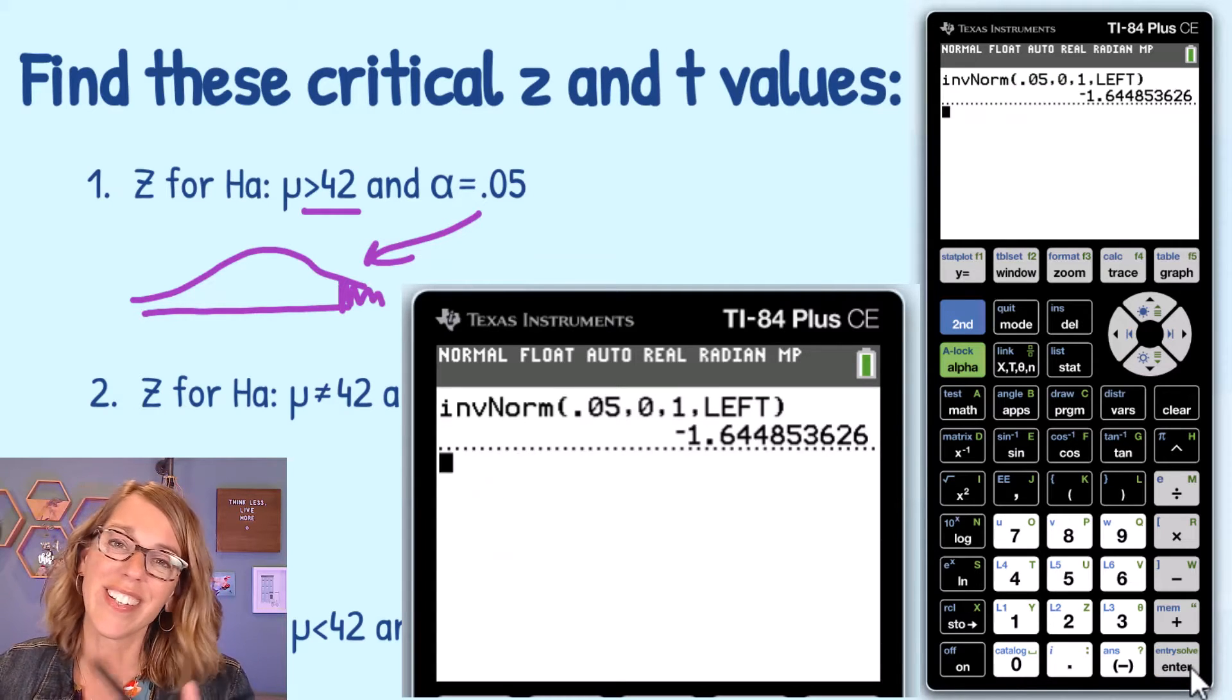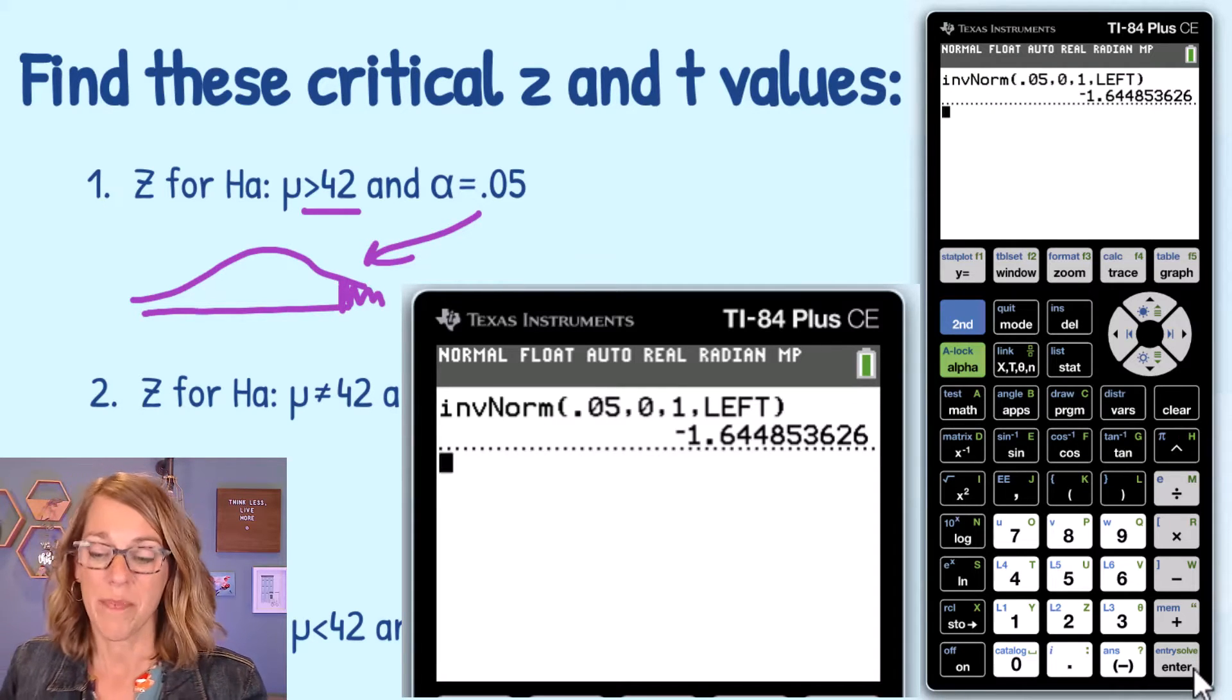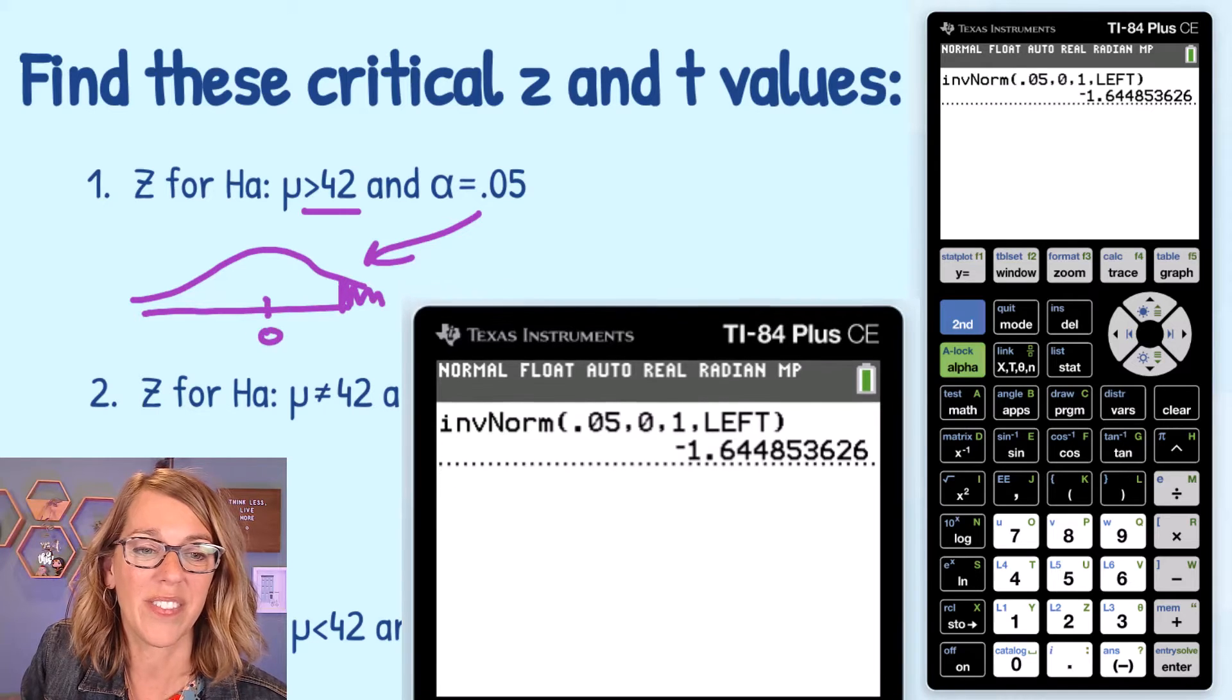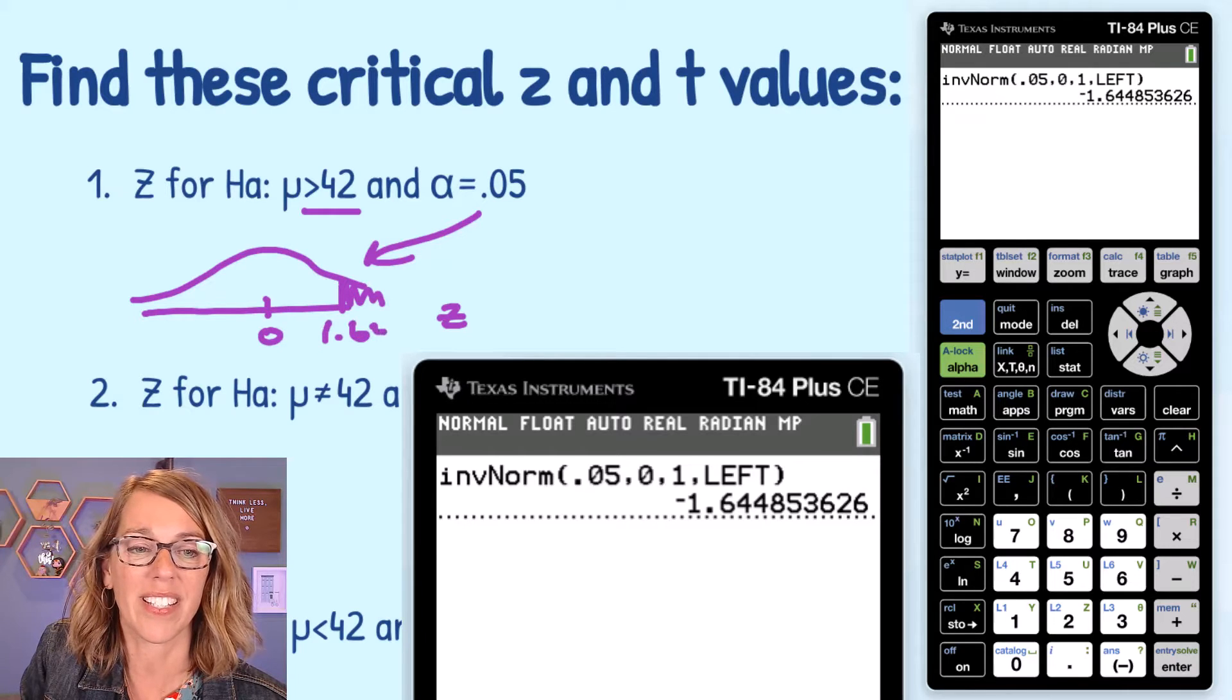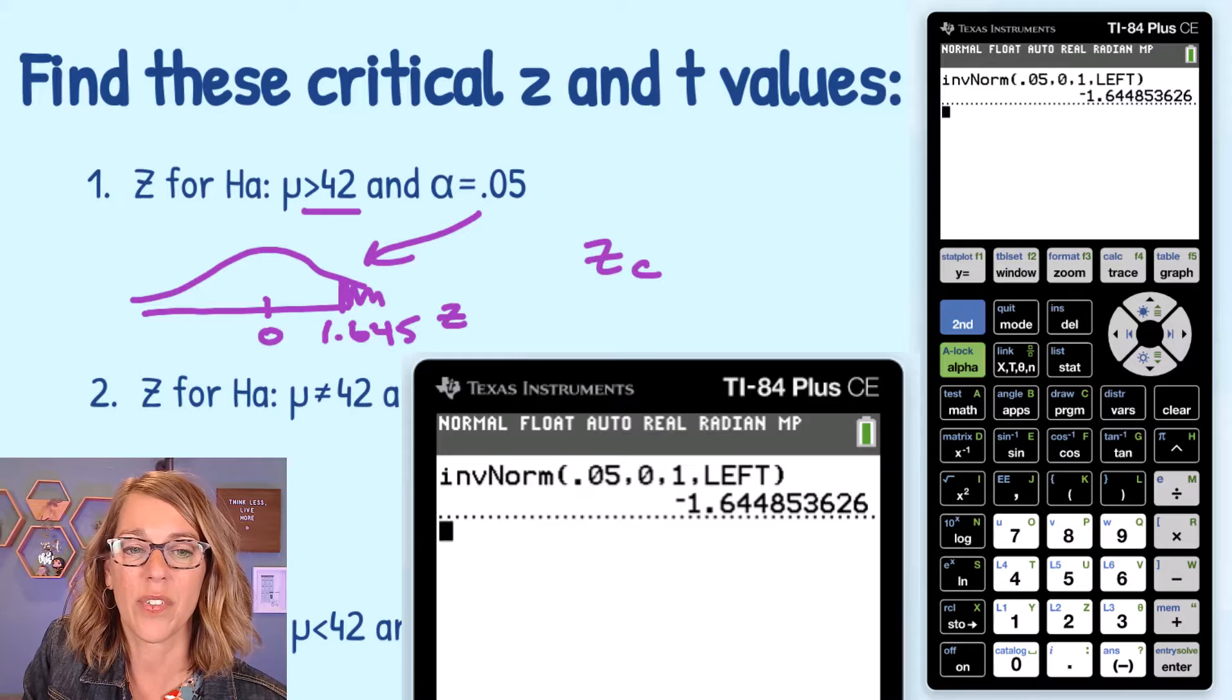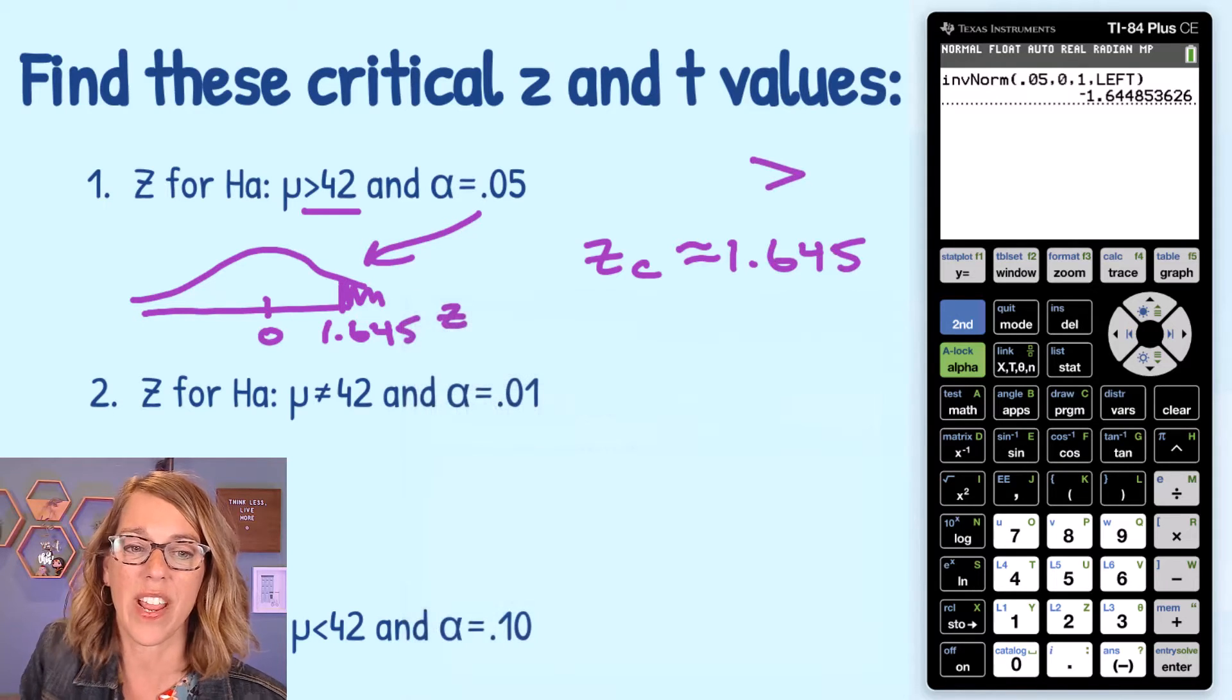Now the calculator doesn't understand that you're on the right hand side. Notice how I just left it on left. But I know that when I'm working with z-scores, 0 lives in the middle here. So the cutoff that I've got is actually a positive 1.64. I'll round that to 1.645. So this critical value is positive 1.645 since I've got that greater than symbol.